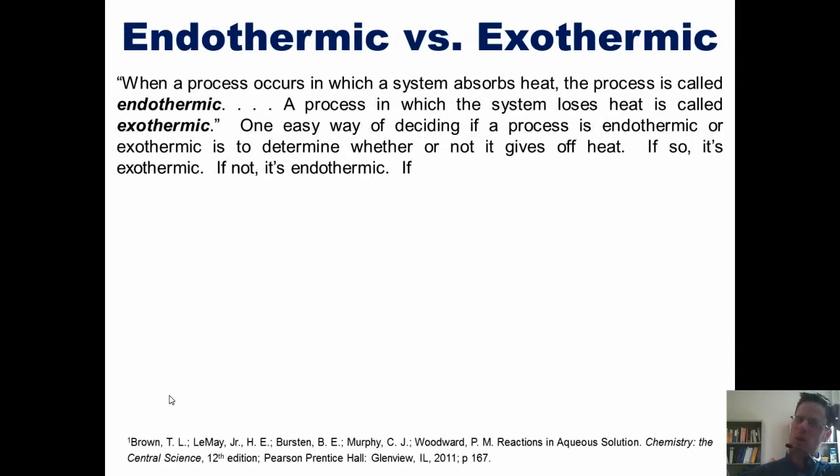So this begs the question, what do endothermic and exothermic, which I talked about earlier, really mean? Well, when a process occurs in a system that absorbs heat, the process is called endothermic, and the overall sign for delta Q is positive. A process in which the system loses heat is called exothermic, and the overall sign for delta Q is negative.